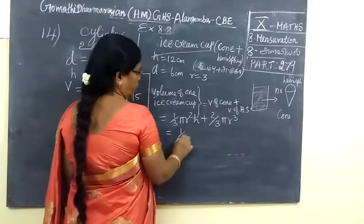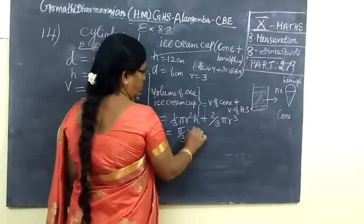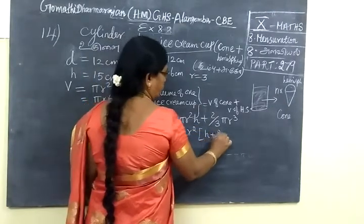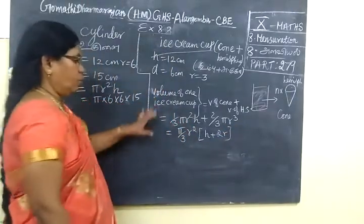So, the formula is 1/3 π r². We can factor: 1/3 π r² times (h + 2r). This is the volume of one ice cream cup. We want n number of ice cream cups.